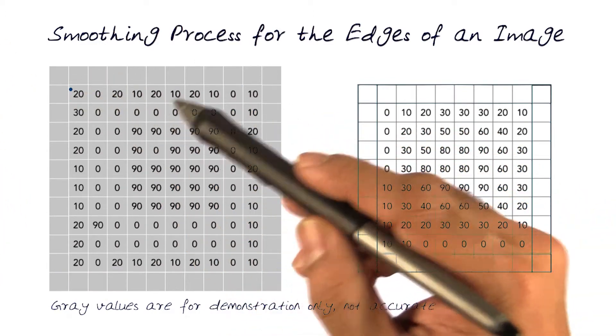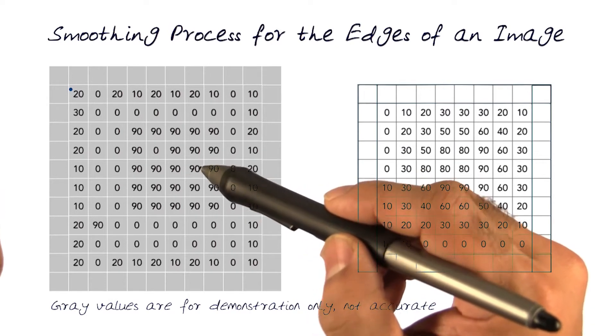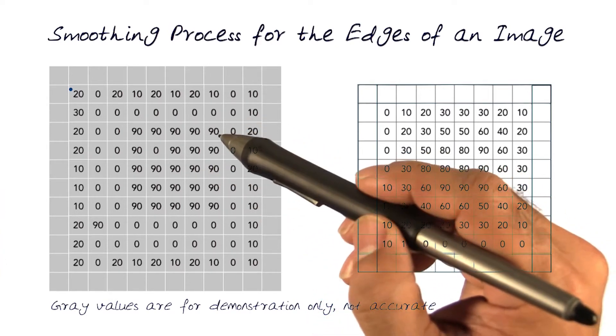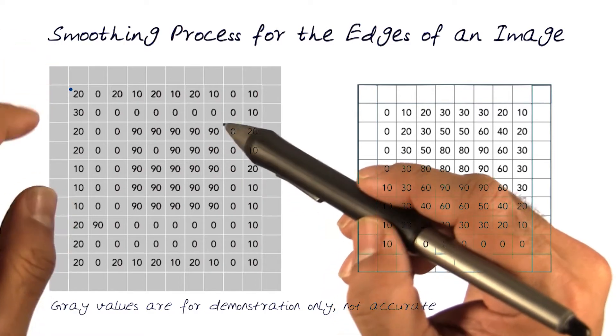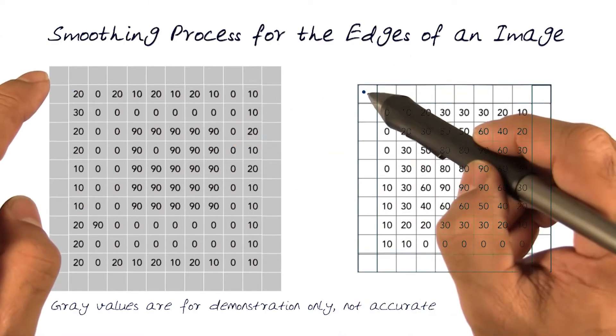Of course, if my kernel or my size of the filter that I'm looking at is bigger than three, let's say five by five, then we'll have to add three different rows and columns to be able to give it more information so I can fill this out.